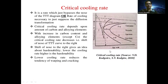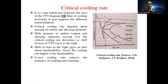Next is the critical cooling rate. It is the rate which just bypasses the nose of the TTT diagram, or the rate of cooling necessary to just suppress the diffusion transformation and avoid transformation of austenite into pearlite or bainite. Such a curve is called the critical cooling curve. The critical cooling rate depends on the amount of carbon and alloying elements. With increasing carbon content and alloying elements (except cobalt), the critical cooling rate decreases, shifting the nose of the TTT curve to the right, which indicates higher hardenability. A lower cooling rate reduces the tendency of warping and cracking.